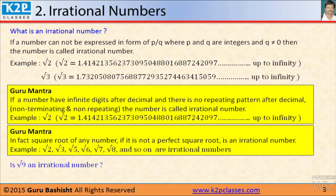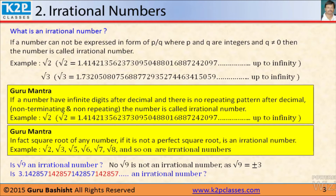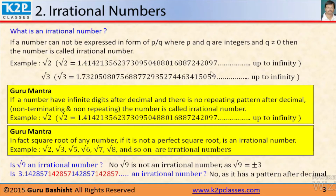Is root 9 an irrational number? No, because the square root of 9 is plus or minus 3, which is an integer. What about the number 1.2345678751428751? No, because the set of digits 1, 2, 3, 4, 5, 6 is repeating. So if a number is repeating or terminating, it is not an irrational number.